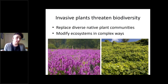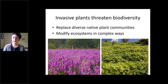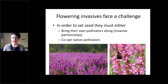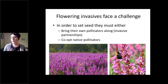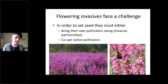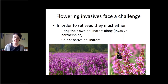All of you know full well that invasive species threaten biodiversity by replacing diverse native communities and modifying ecosystems in complex ways, like the way that scotch broom can modify soil chemistry by being a nitrogen fixer. And in order to do this, if they're a flowering invasive plant like scotch broom, they face a little bit of a challenge because they need to get pollinated and set seed. They have to either bring their own pollinators along — these so-called invasive partnerships between non-native plants and non-native bees.